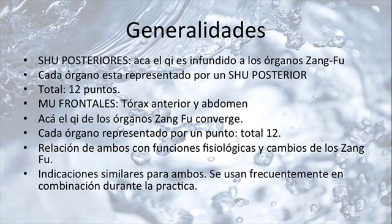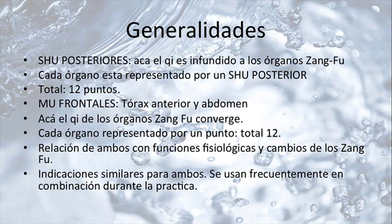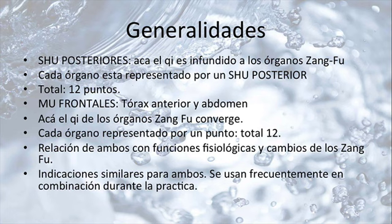Ya hemos visto bastante de esto. Los Shu posteriores: el Shu se infunde a través hacia los órganos Zanfu. Recordemos que los Shu posteriores están todos en el canal Taiyang del pie. Cada órgano está representado por un Shu posterior. Los 12 puntos Shu posteriores se encuentran en la región posterior, sobre el canal Taiyang del pie, es decir, el canal de vejiga. Los puntos mu frontales o mu anteriores se encuentran en la región del tórax anterior y en la región del abdomen. Lo que dicen es que el Shu de los órganos Zanfu converge. Los Shu posteriores son más para Zang; los mu frontales son más para Fu.